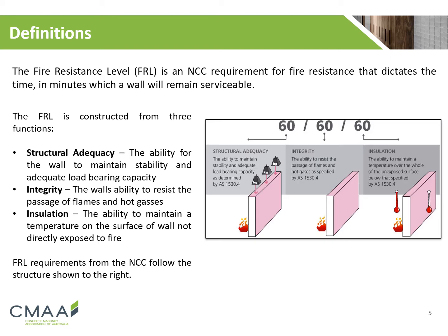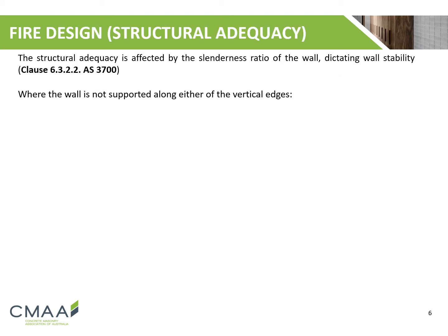Generally, FRLs are presented using the notation provided in the figure to the right. The structural adequacy of a concrete masonry wall is affected by the slenderness ratio of the wall, which dictates the wall stability.